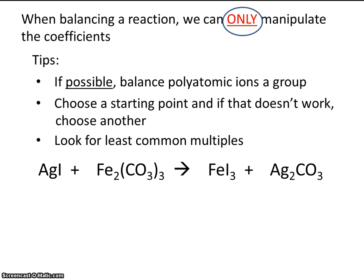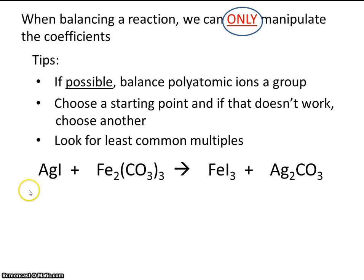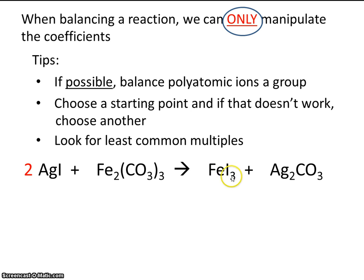So let's try a sample problem. Let's just pick a place to start — any spot is good. Let's say we'll start here with silver. If we have two silvers on the right, that means we're going to need two silvers on the left. So by placing this coefficient of two out front, that made two silvers, but it also made two iodines. So now we have two iodines on the left. That means we're also going to need two iodines on the right. You can see we already have three iodines, so there really isn't a number that we can place out front to make this a two.